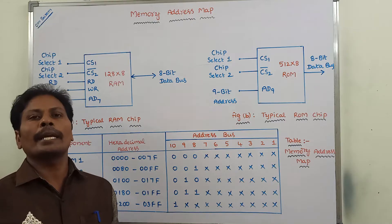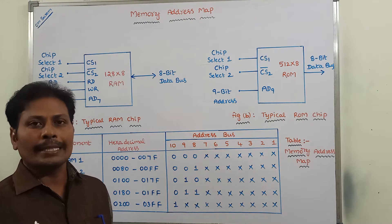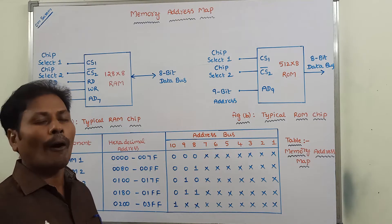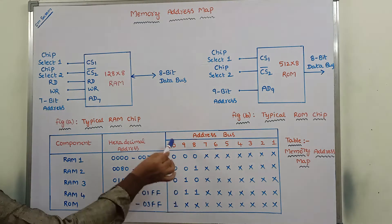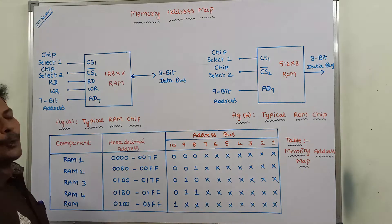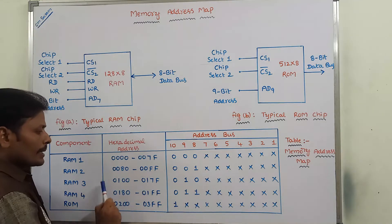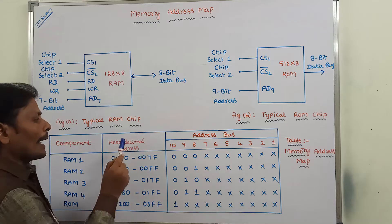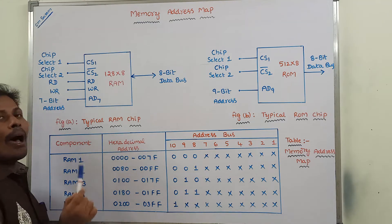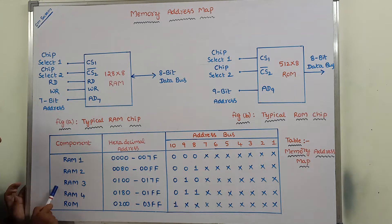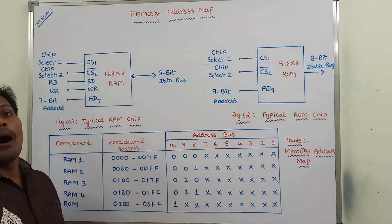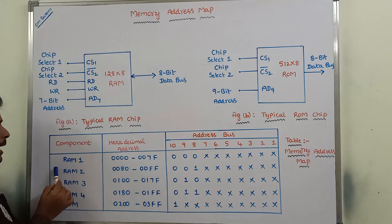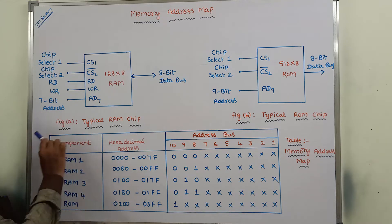First of all, what is memory address map? Memory address map is a table that shows a pictorial representation of assigned address space for each chip in the computer system. This table shows a memory address map. The second column represents the hexadecimal address. We are assigning the hexadecimal address space for RAM chip and ROM chip.